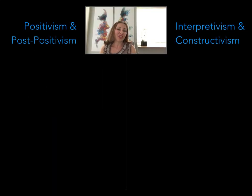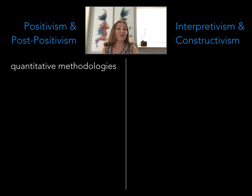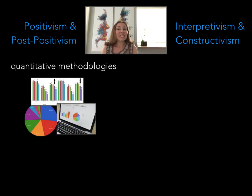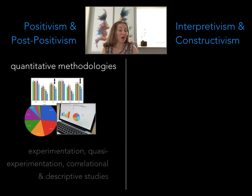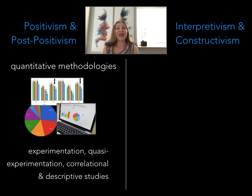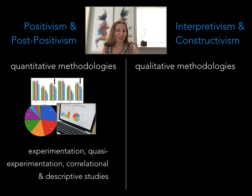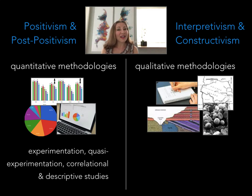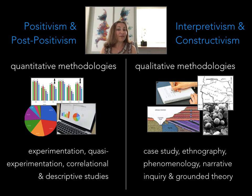As you can imagine, these views lead to quite different ways of approaching research. Positivists and post-positivists tend to use quantitative methodologies that entail measurement, numbers, mathematics, and statistics — specifically experimentation, quasi-experimentation, and correlational and descriptive studies. Interpretivists and constructivists generally use qualitative methodologies that entail words, symbols, artifacts, and images — these methodologies include case study, ethnography, phenomenology, narrative inquiry, and grounded theory.